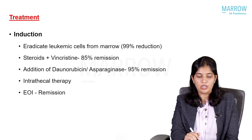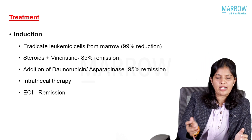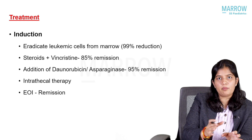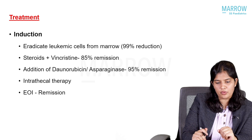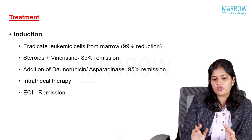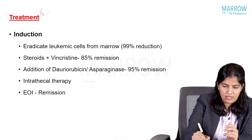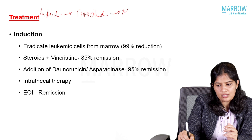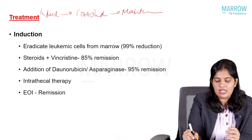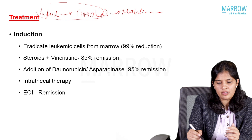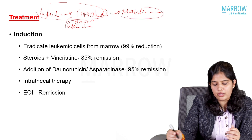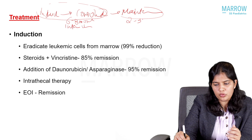Now coming to treatment. First, we stratify the patient as standard risk or high risk, and based on that, we intensify our protocol. Overall, treatment includes three parts: induction, consolidation, and maintenance. Induction and consolidation generally take 6 to 8 months of intensive chemotherapy, and maintenance is a very low-dose chemotherapy with a duration of generally 2 to 3 years.